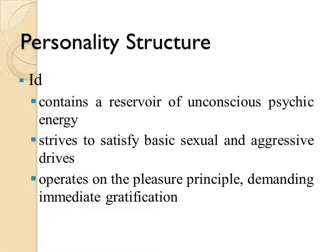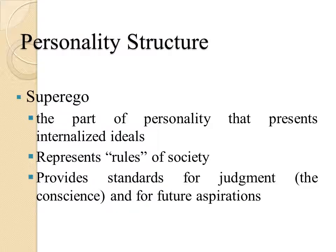The Id is a component of personality located in the unconscious containing psychic energy that has been repressed — always comprising basic sexual and aggressive drives, working through the pursuit of pleasure and immediate gratification. The Superego is the part of the personality that represents internalized ideas acquired from society — values and ideals — and represents the rules of society.